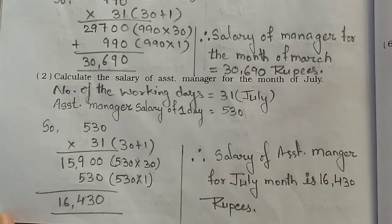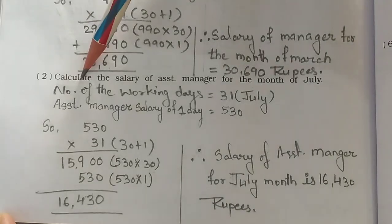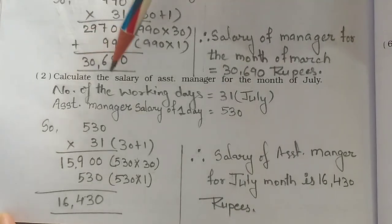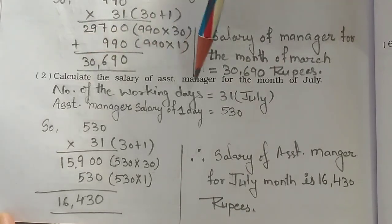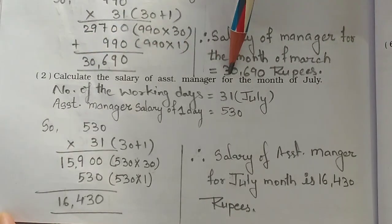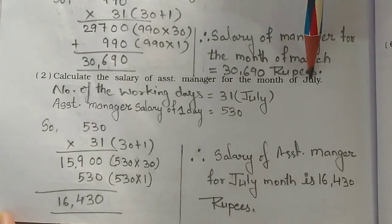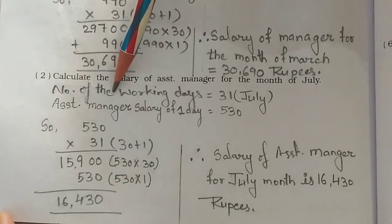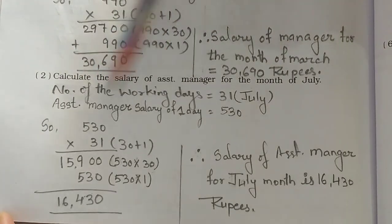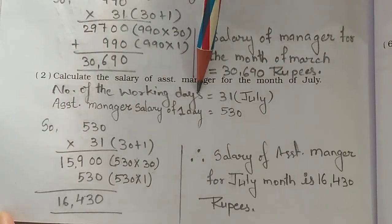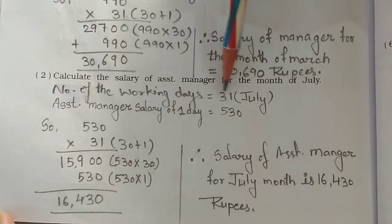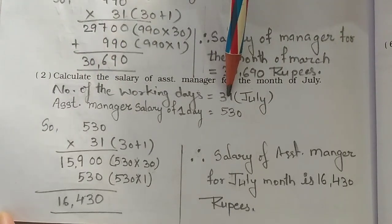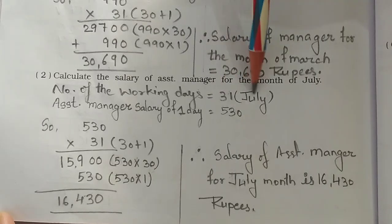Question 2: Calculate the salary of the assistant manager for the month of July. The number of working days in July is 31 days.